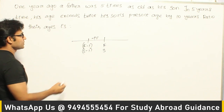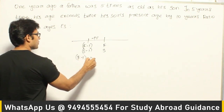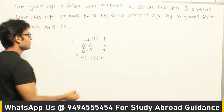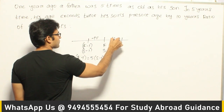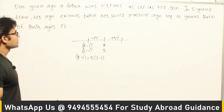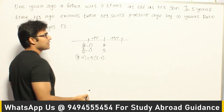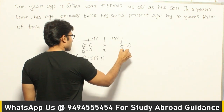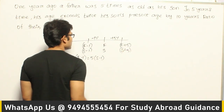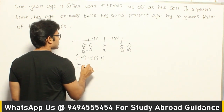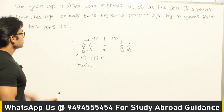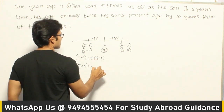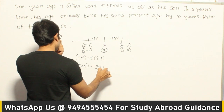One year ago, father was 5 times as old as his son, which gives us: F-1 = 5(S-1). That is the first condition. In 5 years' time, father's age will be F+5 and son's age will be S+5. The second condition says the father's age in 5 years exceeds twice his son's age by 10 years.